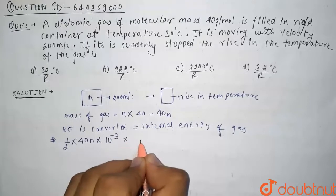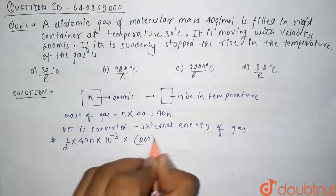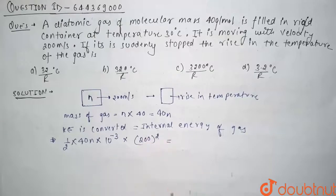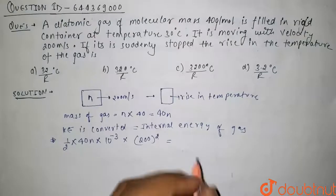Now we know that internal energy of a gas is given by f by 2 nRT.